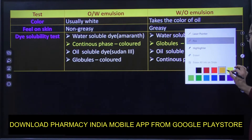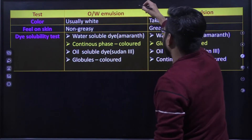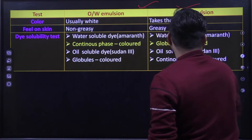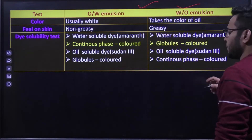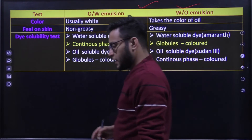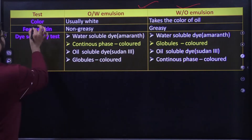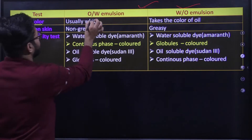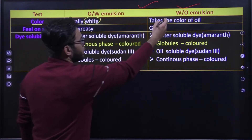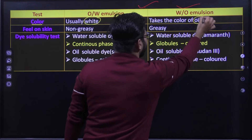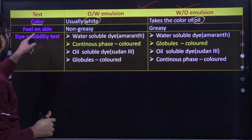यहां पर oil in water और water in oil के specific tests दिये गए हैं. पहला test है color — याद रखेगा जो oil in water है वो usually white रहेगा, पर जो water in oil रहता है वो mainly oil का color ले लेता है. यह basic difference है.